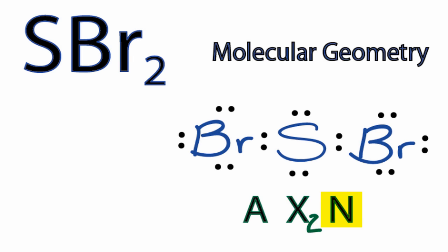And then N, those are the pairs of non-bonding electrons, sometimes called lone pairs. So we have one, two pairs.